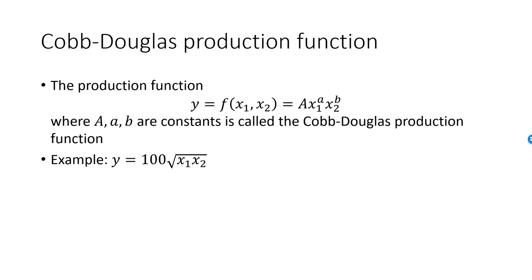For example, y equal to 100 times the square root of x1 times x2 is a Cobb-Douglas production function with capital A equal to 100, a equal to one-half and b equal to one-half. With nine units of the first factor and 16 units of the second, the firm would produce 100 times 3 times 4 or 1200 units of the output good.